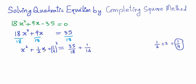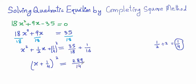The left-hand side is now a perfect square: this is a², this is b², and this is 2ab, so we write it as (x + 1/4)². The right-hand side becomes 35/18 + 1/16, which equals 289/144. You can verify this using a calculator or mental maths.